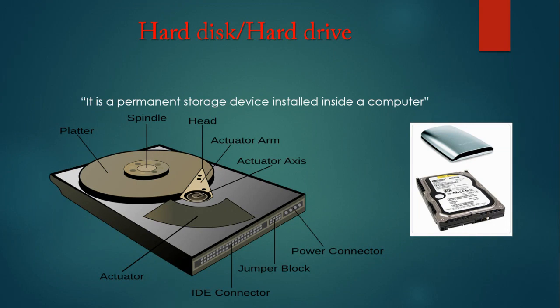Sometimes the hard disk can be removed from the computer and carried around — these can also store more data than an internal hard disk. Hard disk packs are an example of portable hard disks. As you can see, there are two hard disks: one is internal and the other is external. The internal one is safe from outside hazards, whereas the external hard disk drive is not, so it is better to use an internal hard drive.